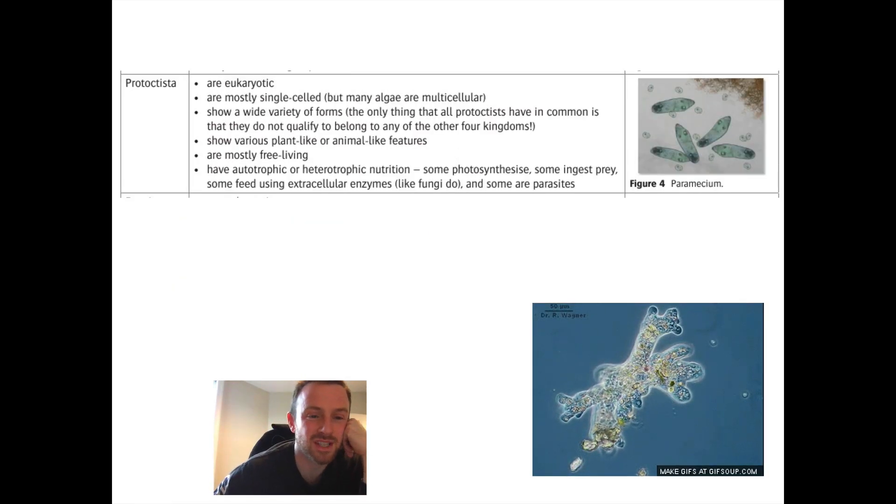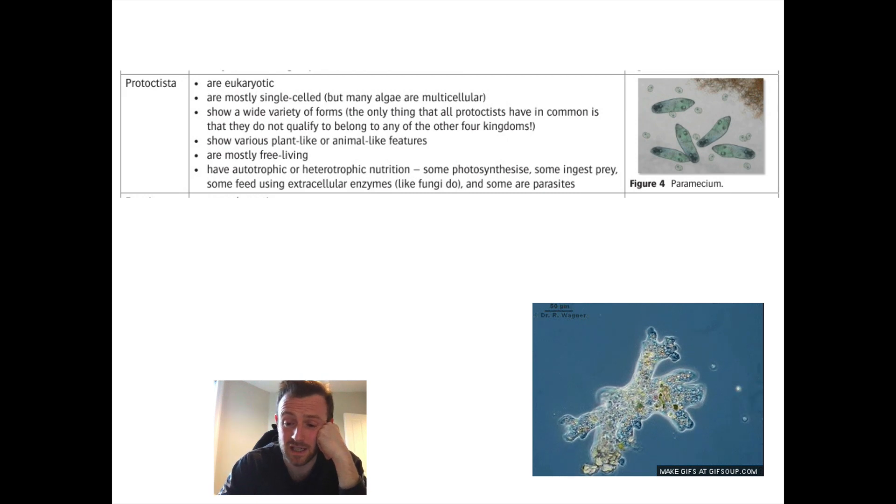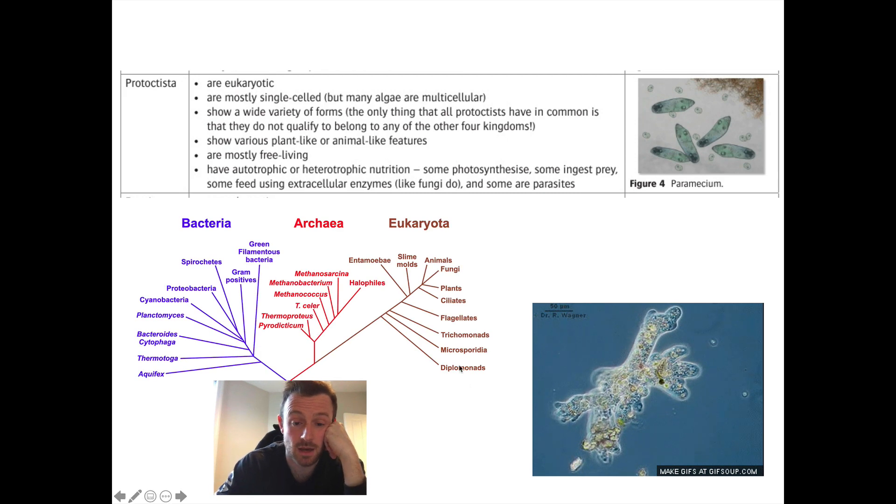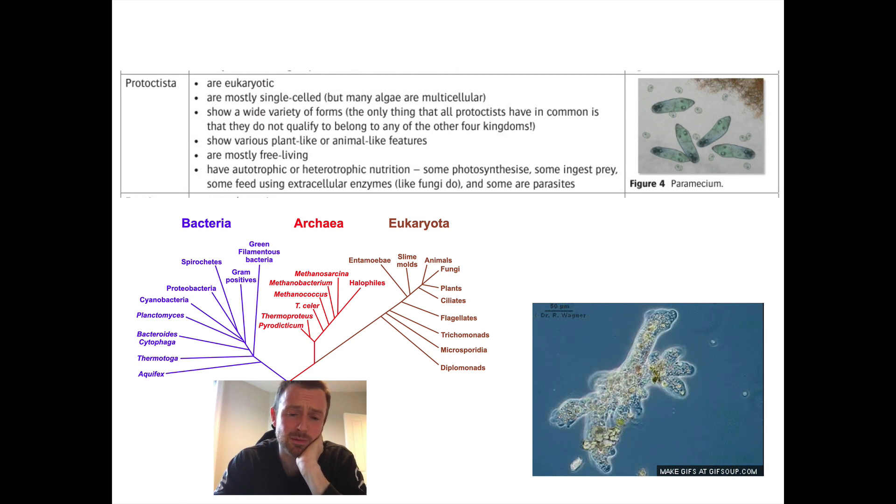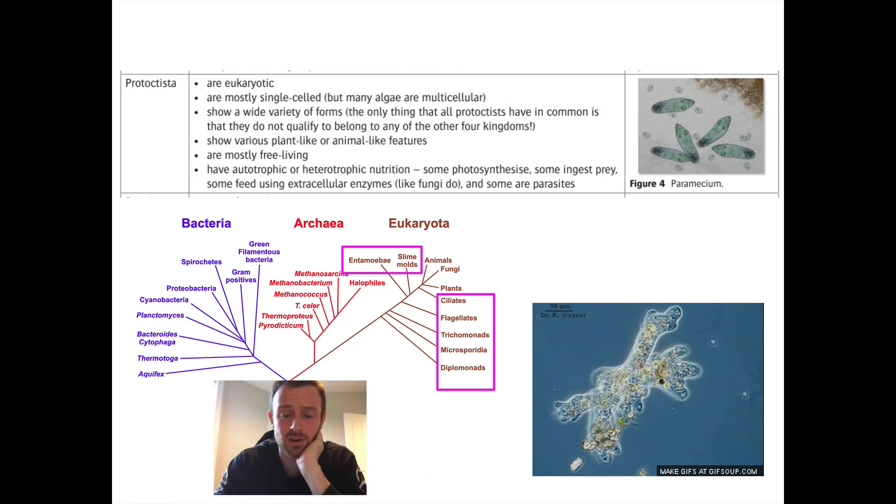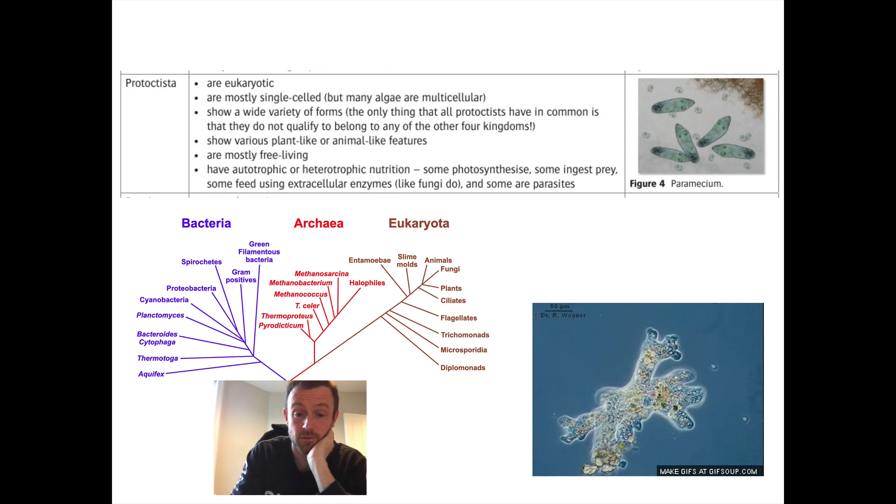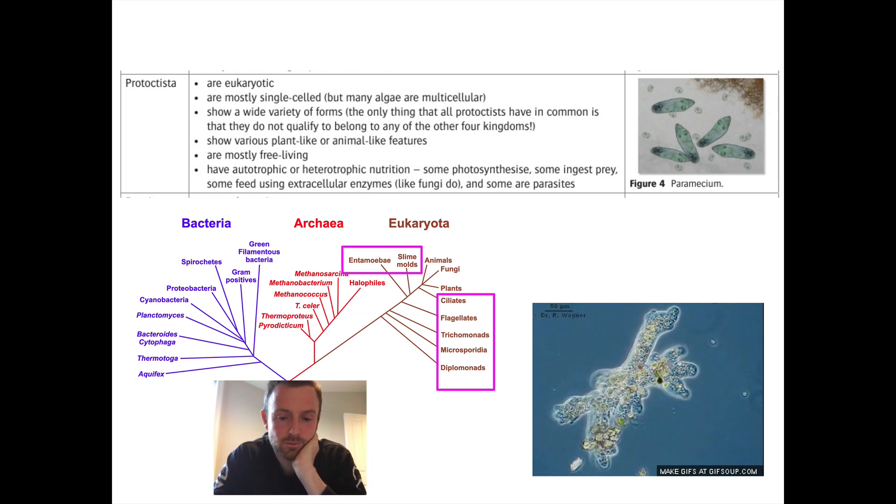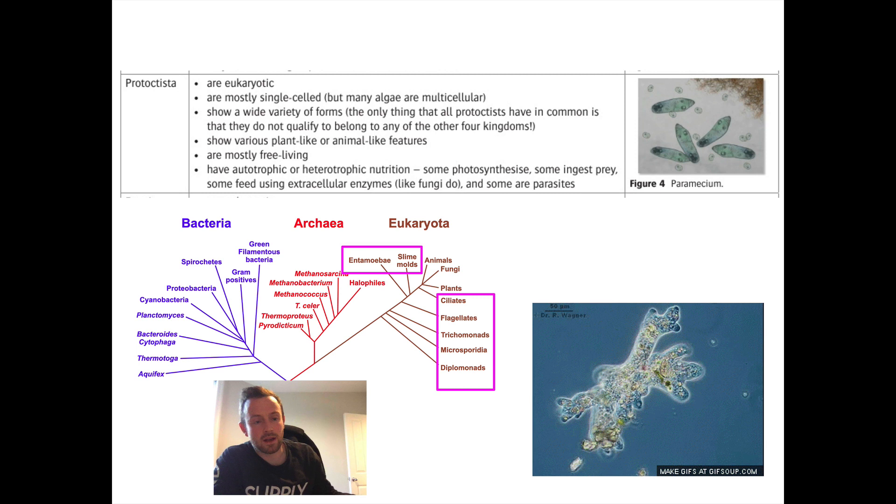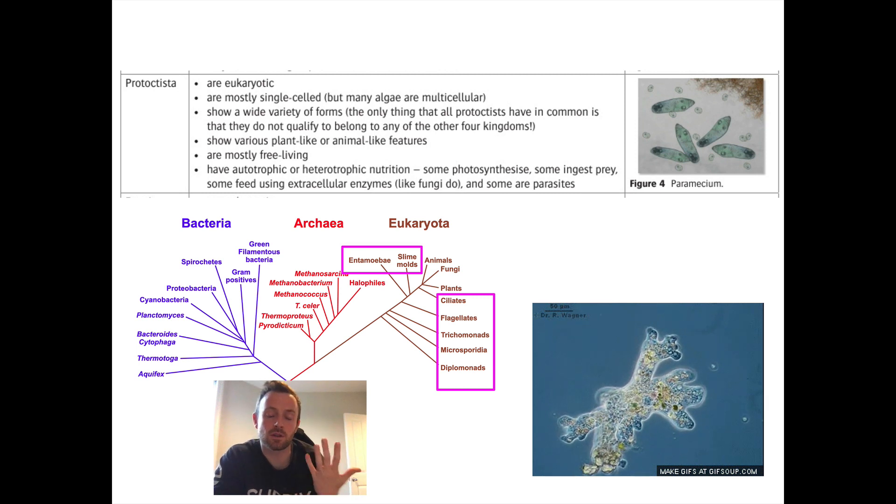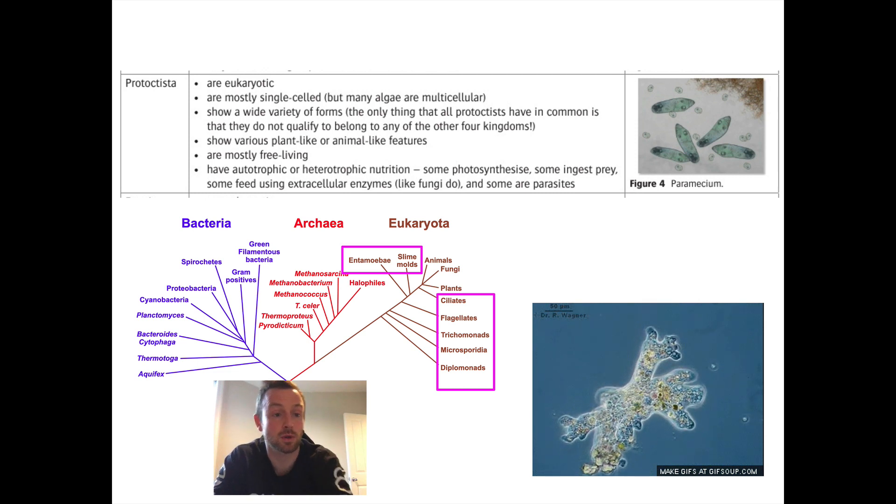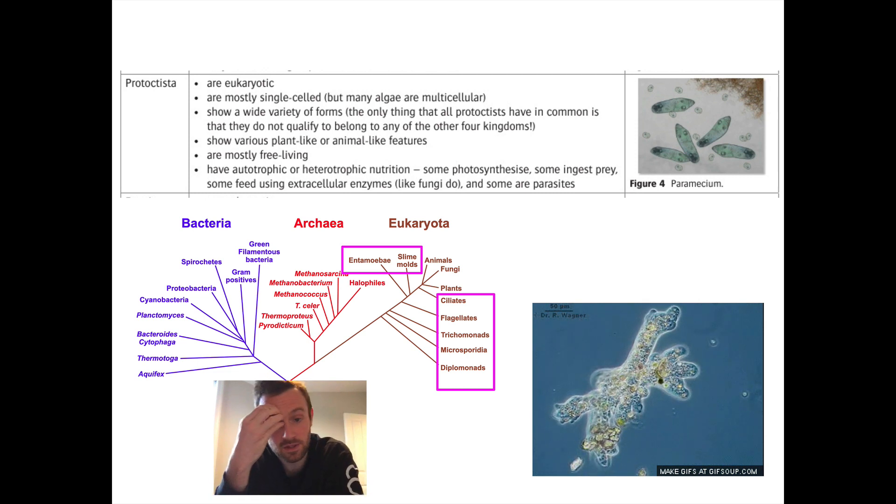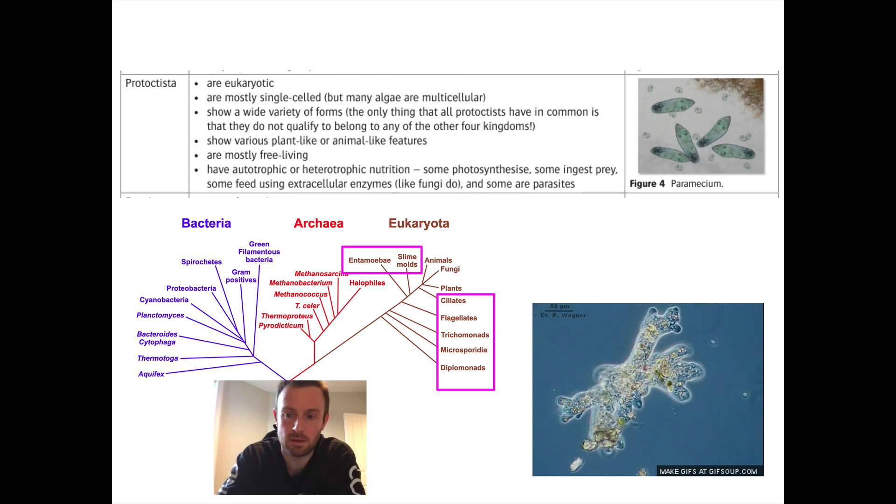Okay, protozoa or protoctista. Now, these are the odd ones out, basically. I'm going to go back to this image here, which you've seen a few times. And basically, if we don't know where we should put it, we call it a protozoa. So, we've looked in the eukaryotic zone over there before, and if we don't put it in the animals, fungi, and plants, and it's a eukaryote, it's a protozoa. So, they're eukaryotic non-animals, non-fungi and non-plants, then it's a protoctista.